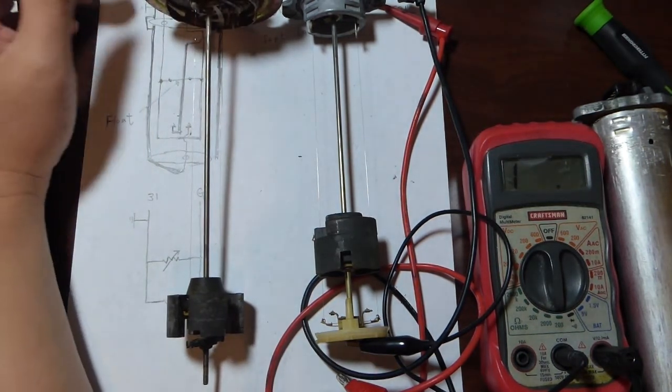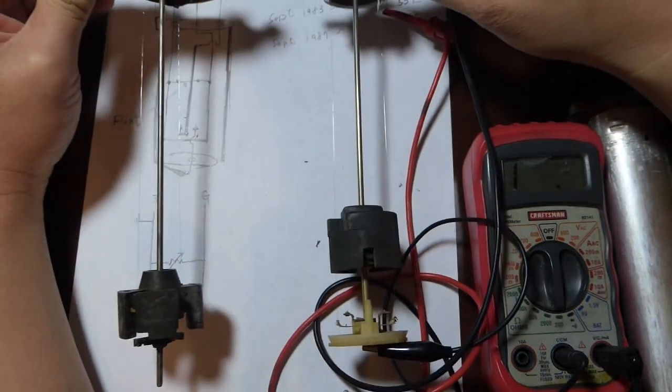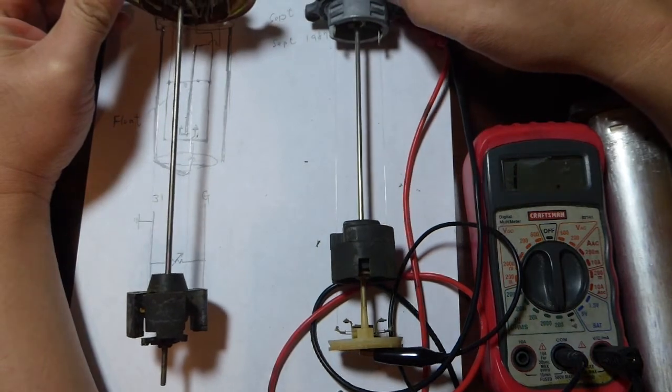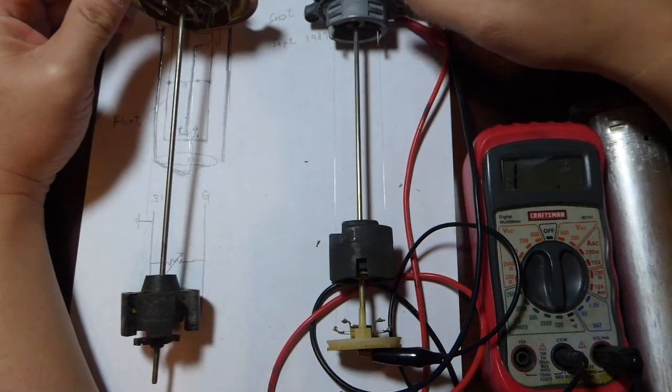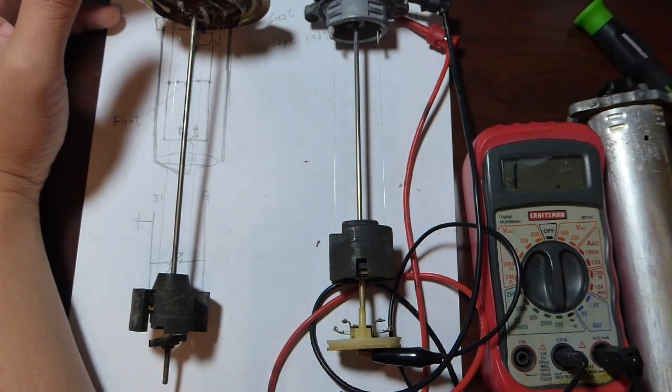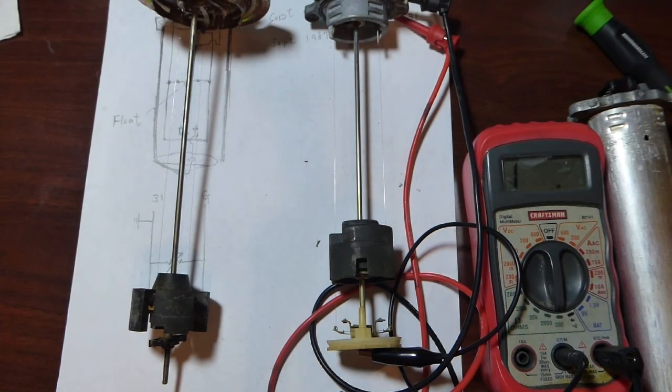In a 63 liter tank, those two sending units are basically put in series. You have to have both units working properly to have a correct fuel level display on your gauge. Any one of them is at fault, they will not give you the accurate fuel level.